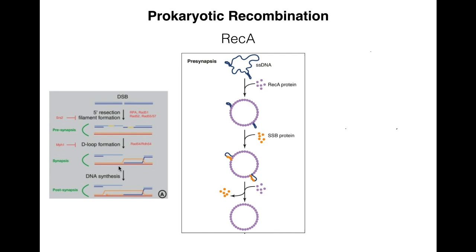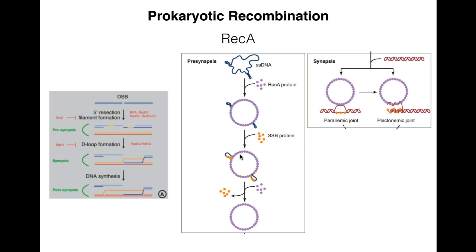REC-A is involved in pre-synapsis, where it binds to single-stranded DNA. In concert with other single-stranded binding proteins, it removes all the secondary structure from the DNA. Since we're talking about prokaryotes, we're looking at a circular DNA molecule. Once REC-A is bound to the single-stranded DNA in pre-synapsis, we then have synapsis.